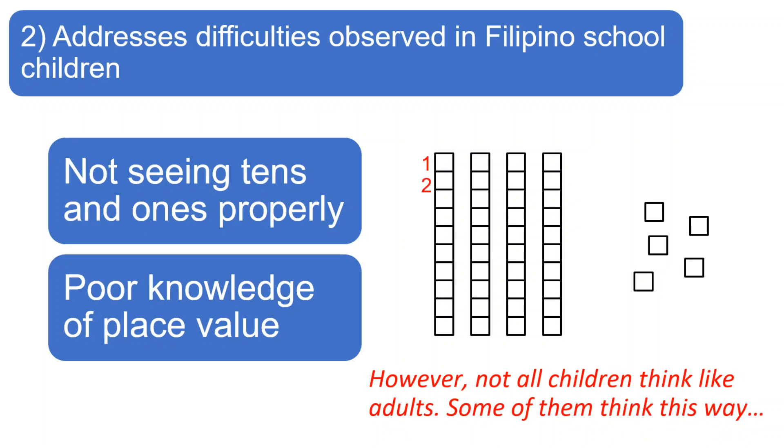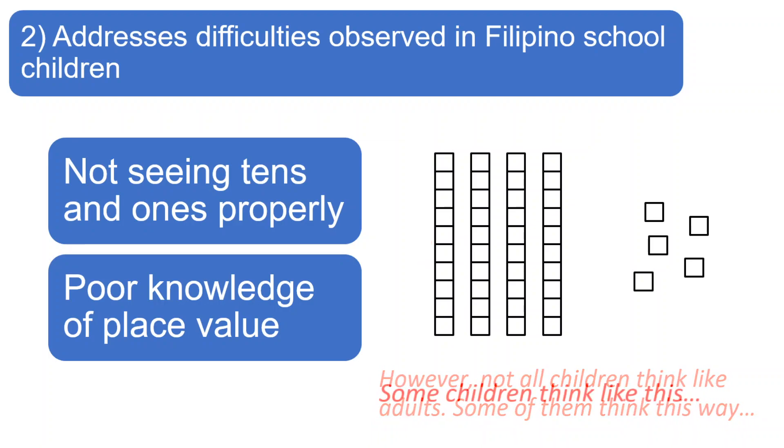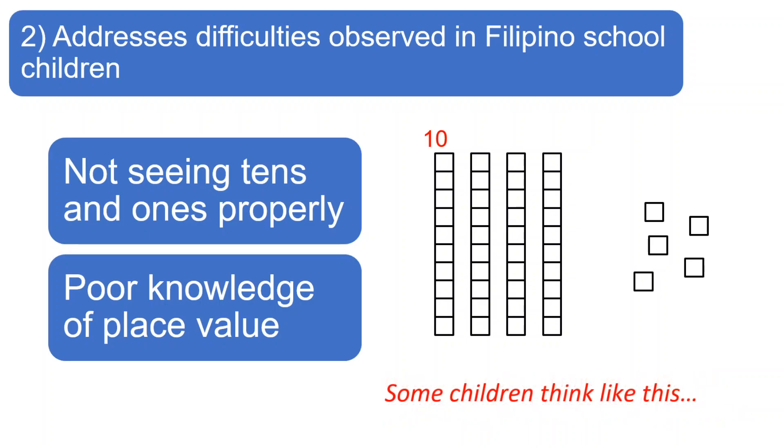1, 2, 3, 4, 5, 6. Hindi kasi nila nakikita ang 10. Ang iba naman, ganito mag-isip. 10, 20, 30, 40, 50, 60, 70, 80, 90. Para sa kanila, mukhang ABC lang ang 10, 20, 30. Hindi talaga nila alam na tigsasampo ang binabanggit nila.